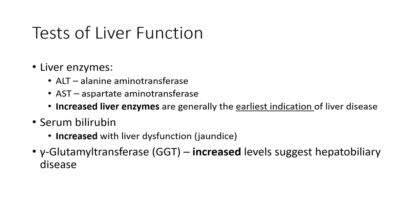Let's talk about some tests of liver function. We have liver enzymes that are important, including alanine aminotransferase, or ALT, and aspartate aminotransferase, or AST. Elevated blood levels of these liver enzymes usually indicate liver injury, and they are generally the earliest indicator of liver disease. Alanine aminotransferase is found mostly in the liver, with lesser quantities in the kidney, heart, and skeletal muscle, making it a much more specific indicator of liver inflammation or damage than AST, because aspartate aminotransferase may also be elevated in diseases of other organs such as the heart or muscle.